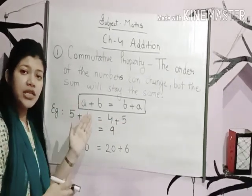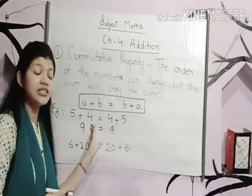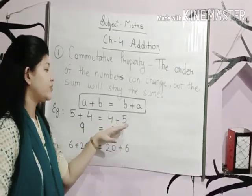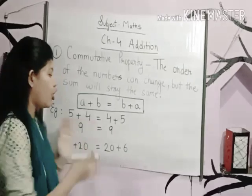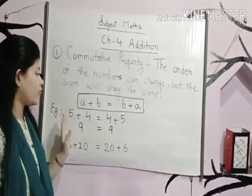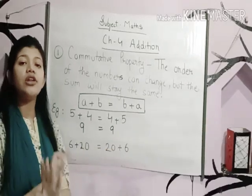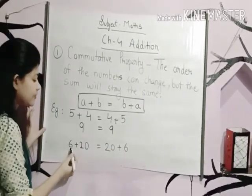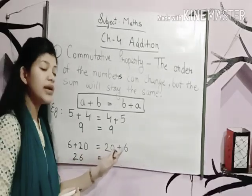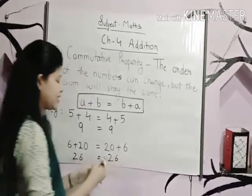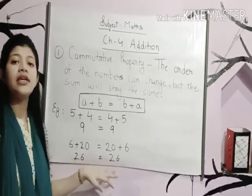On the left side, 5 is acting as the first addend and 4 is acting as the second addend. But on the right side, 4 is acting as the first addend and 5 is acting as the second addend. The order has changed, but the sum will remain the same. Let's have one more example: 6 plus 20 is equal to 26, and 20 plus 6 is also equal to 26. Here also the order of addends has changed, but their sum is equal.